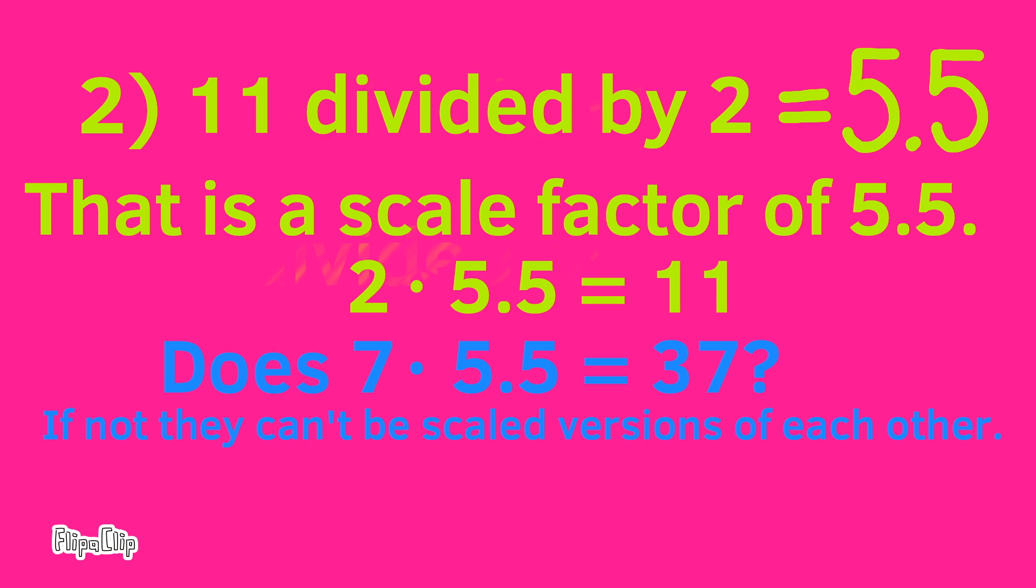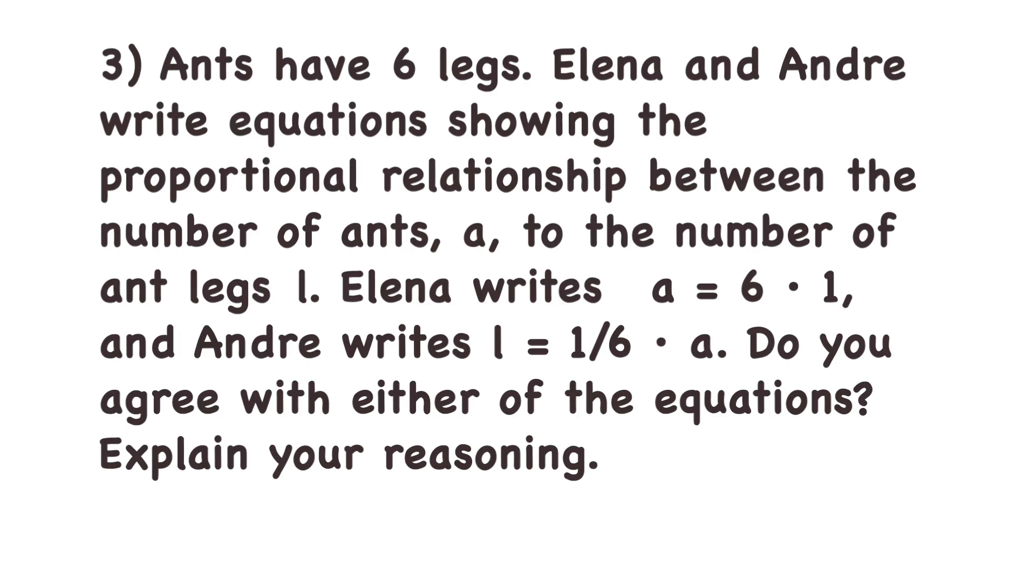Number 3: Ants have 6 legs. Elena and Andre write equations showing the proportional relationship between the number of ants (a) and the number of ant legs (l). Elena writes a = 6 × l, and Andre writes l = 6 × a.